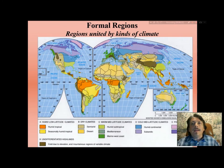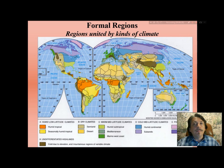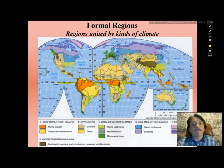In this next example, we have a world map depicting climate regions. Once again, formal regions appear when geographers map out unifying characteristics. For example, there are tropical regions where it rains heavily, running in a band all the way across — in the Amazon, the Congo, and in Indonesia.